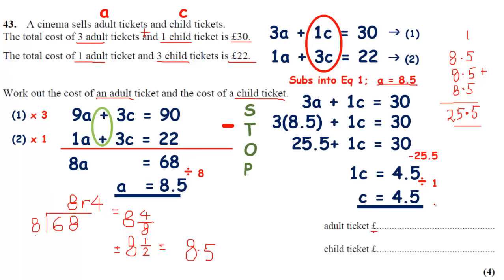So in the answer space, for an adult ticket, 8 pounds 50. For a child ticket, 4 pounds 50. Make sure you write it as money. The pound sign is over there, so they want you to write it as money. In the actual exam, you are very likely to get more than 4 marks for this. It's quite a challenging question. There's a lot here. Make sure you do understand it, make sure you can do it.